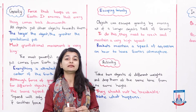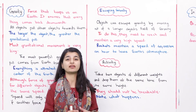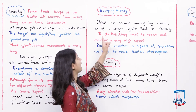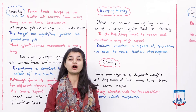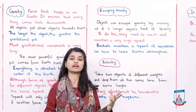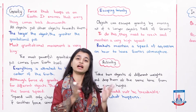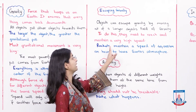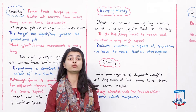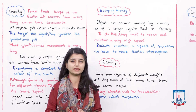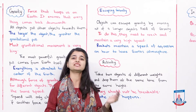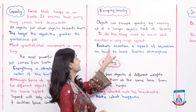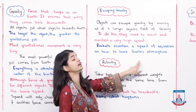Here is an interesting fact about how objects can escape a gravitational pull. Objects can escape gravity by moving out of a larger object's field of gravity. To do this, they need to reach and maintain a very high speed — they cannot simply go fast for a moment and then slow down. They must maintain that high speed consistently.